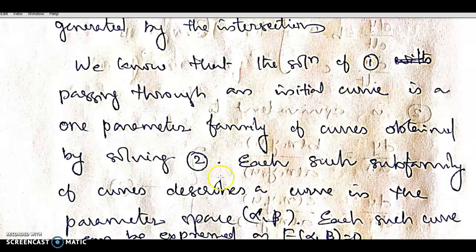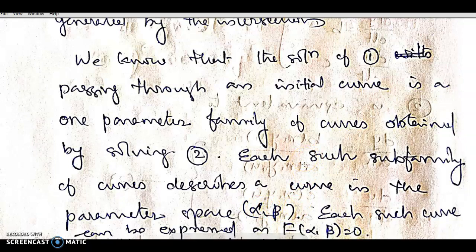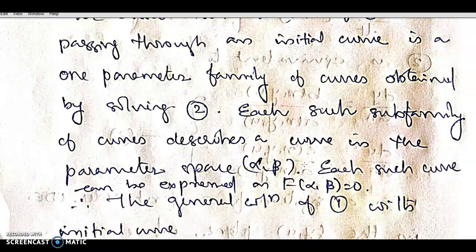Each subfamily of curves describes a curve in the parameter space α-β. Such a subfamily of curves in the parameter space α-β can be expressed as f(α, β) = 0.